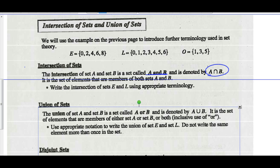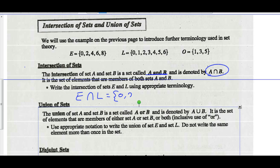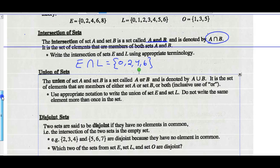It's a set of elements that are members of both sets A and B. So write the intersection of sets E and L using appropriate terminology. E intersect L would be the set of numbers that are members of both set E and set L: 0, 2, 4, 6. Those are members of both sets E and L, so we call those the intersection of E and L.